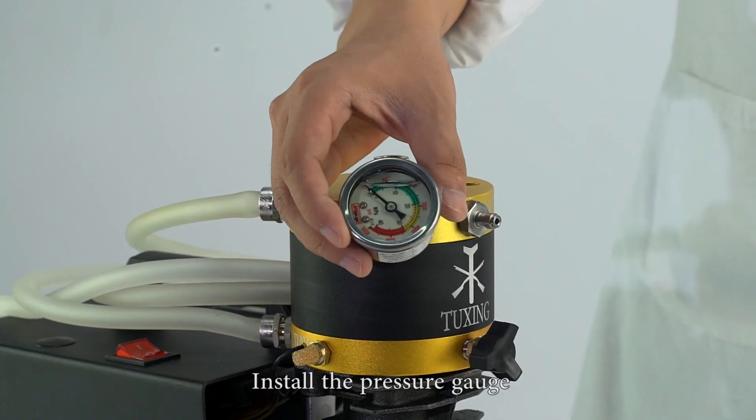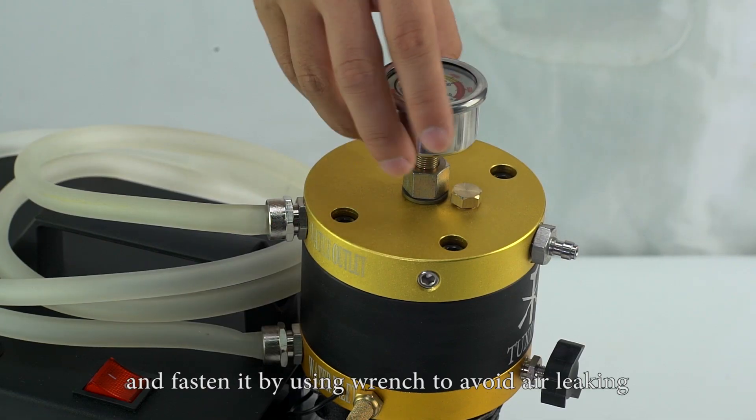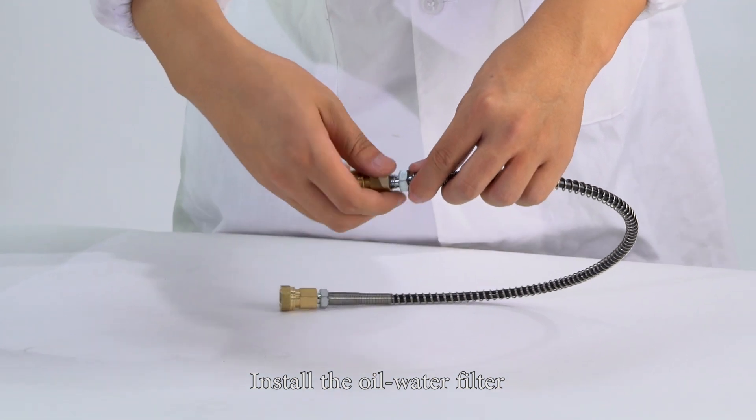Install the pressure gauge and fasten it by using wrench to avoid air leaking. Install the oil water filter.